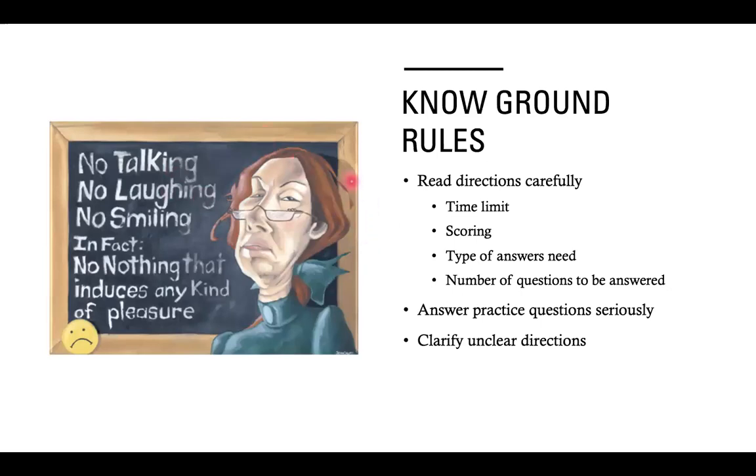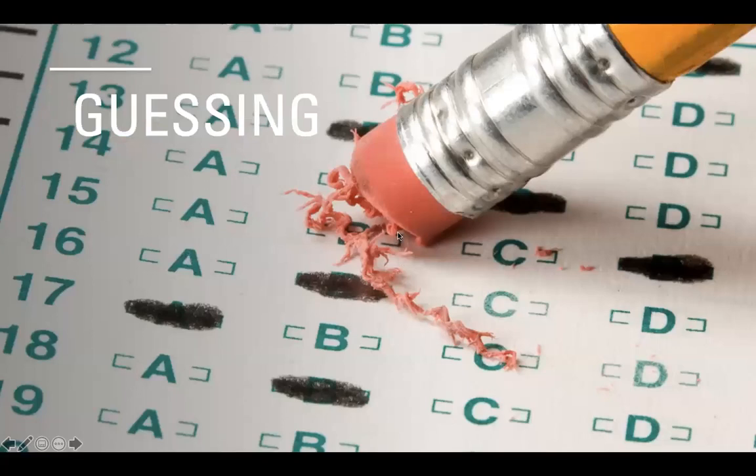Know the ground rules. So, this is very important because part of testmanship is when you are there in the battlefield. You are now at the testing site. Know the time limit. Know your scoring. What is the passing? What is the cutoff? What are the number of questions that have to be answered? And if there's something not clear, clarify it with your professors, clarify it with your schools, your mentors, your training officer, your chairman, your proctors.